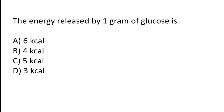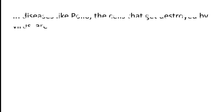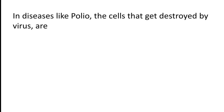The energy released by one gram of glucose is: 6 kilocalorie, 4 kilocalorie, 5 kilocalorie, or 3 kilocalorie? The correct answer is option B — the energy released by one gram of glucose is 4 kilocalorie.